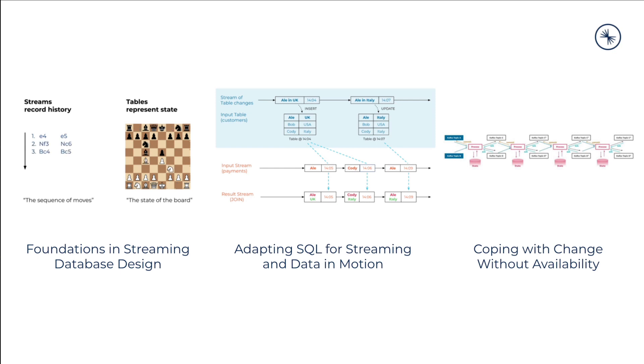In this series, we introduce what we think are the most important topics of making a streaming database production ready. It's written by the same people who helped build ksqlDB, a streaming database available in Confluent Cloud. The series includes blog posts by Gaurzhan Wang, the technical lead of the ksqlDB team, who explains the design foundations and what the differences are between making a streaming database and a relational database reliable.